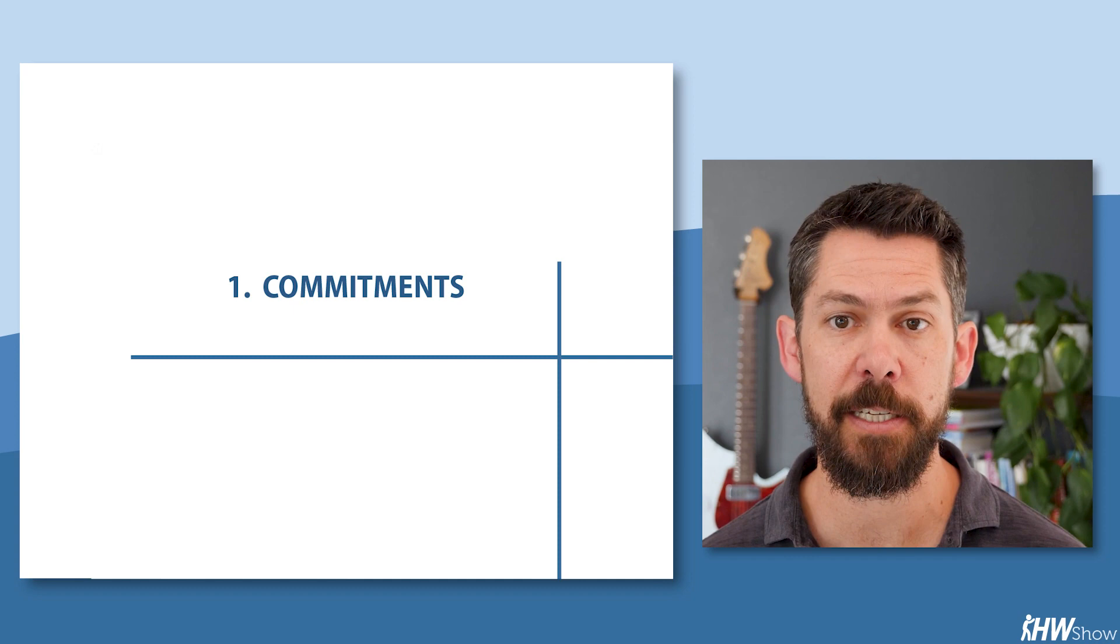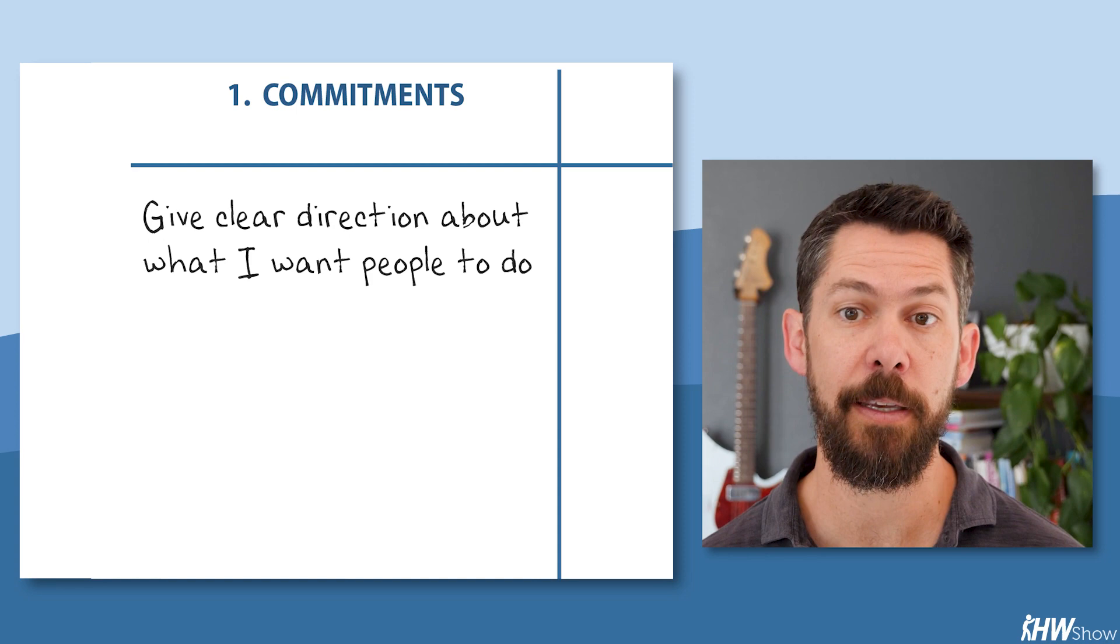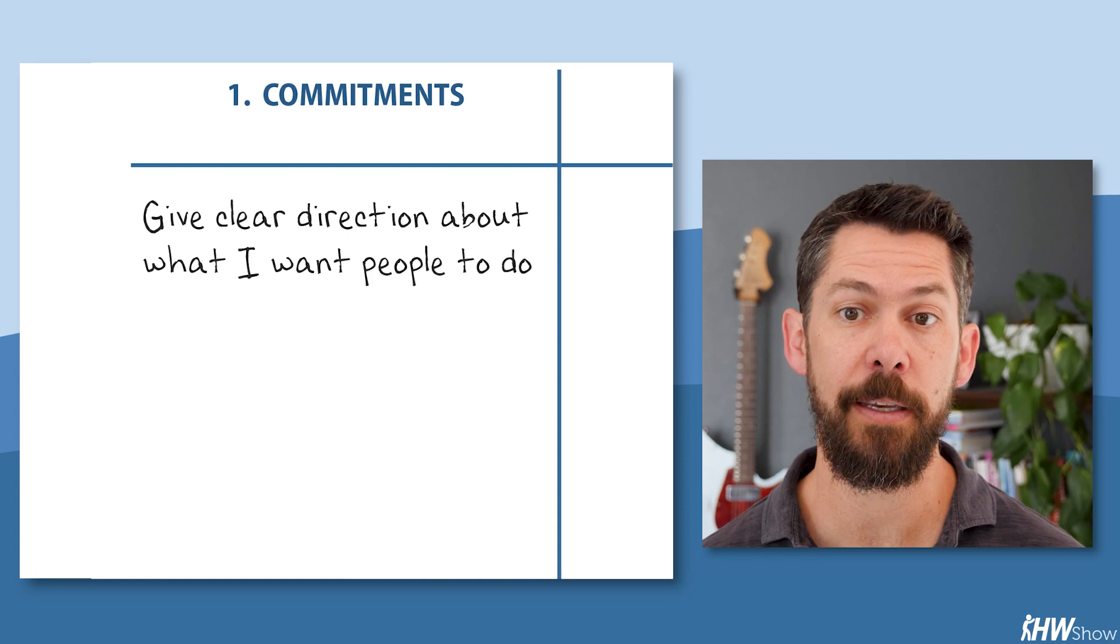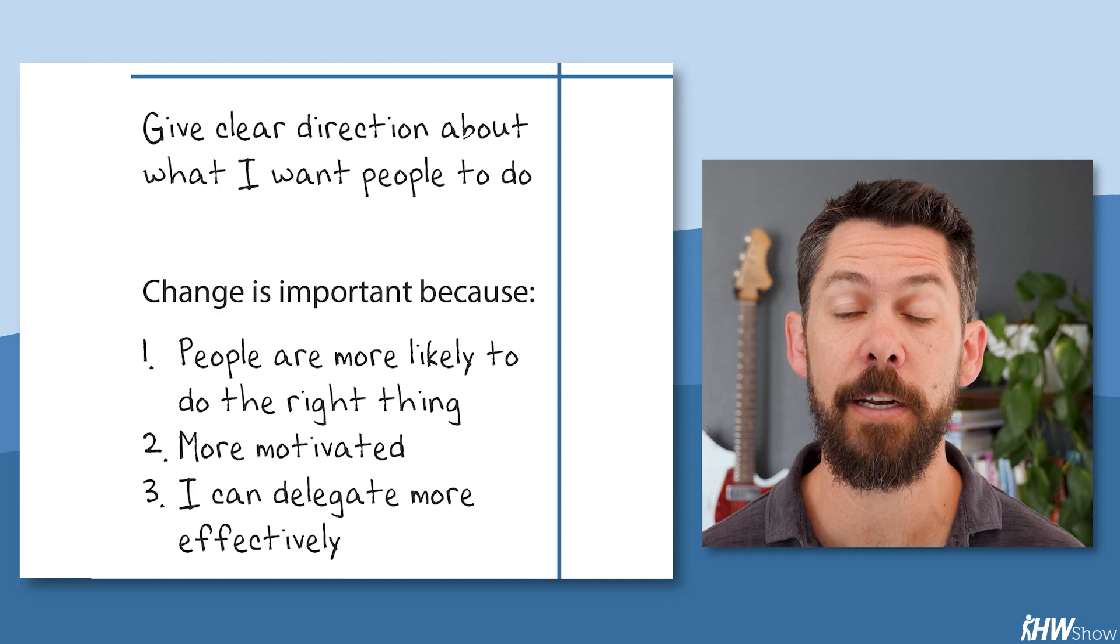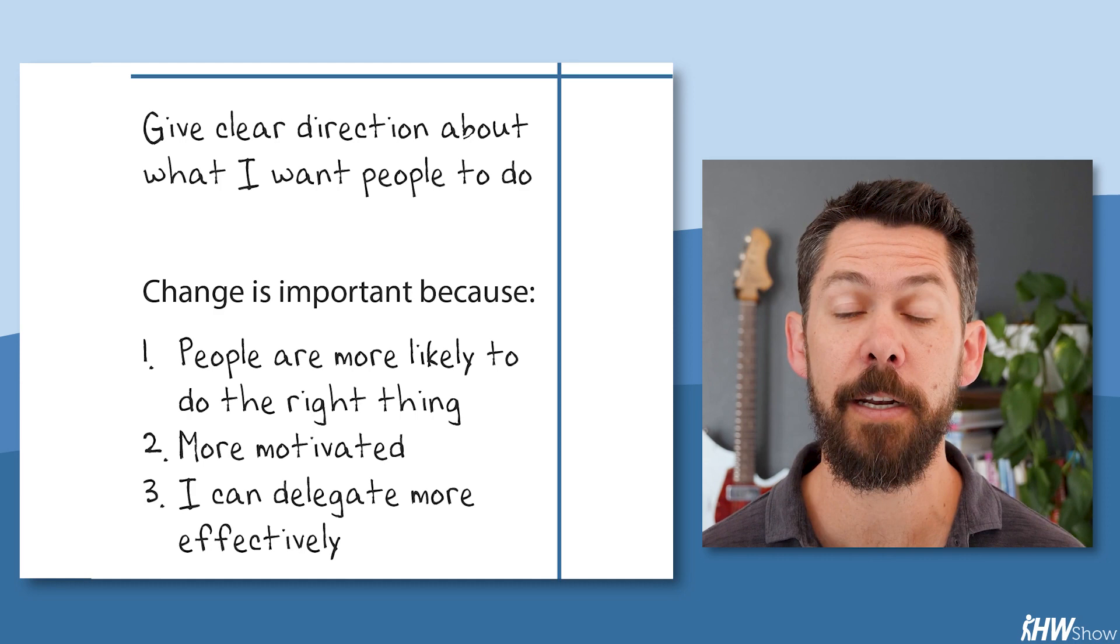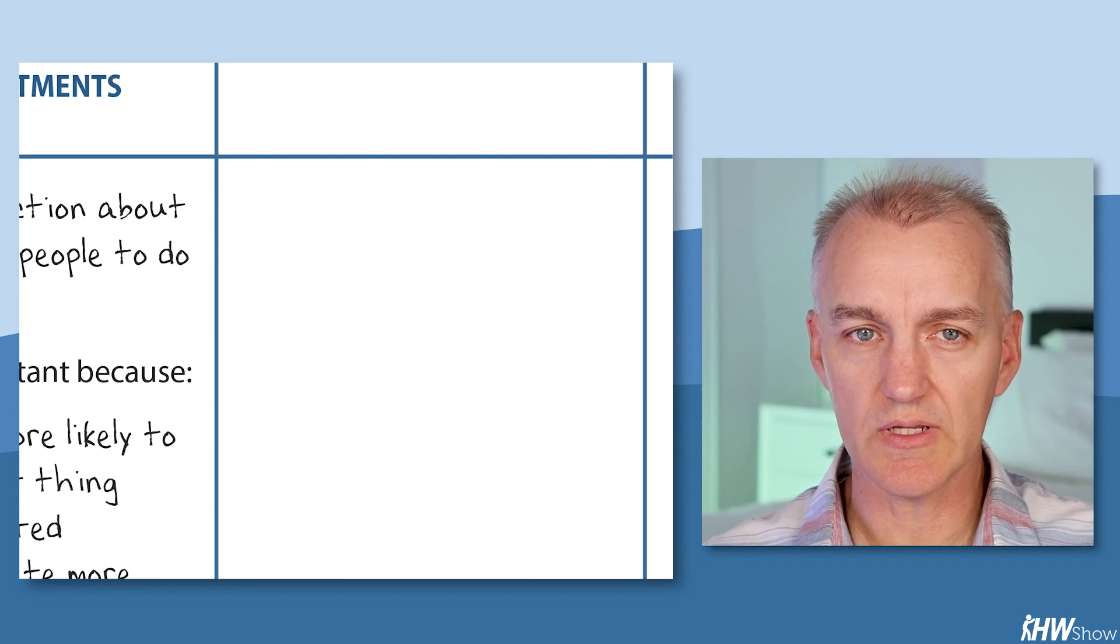So column one is about the visible commitment, the thing you're saying you want to do now and why it's important. In this case, the leader was committed to giving clear direction about what he wants his people to do. Why does it matter? Well, people are more likely to do the right thing if they understand what the right thing is. They'll be more motivated in their work by being able to connect their tasks to a larger goal. And this leader will be able to delegate more effectively because he'll be confident his team understands what they need to do.